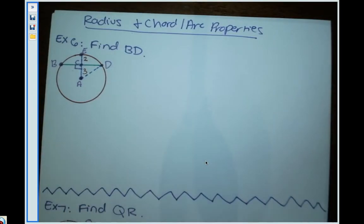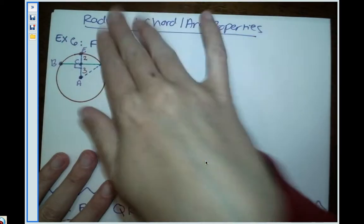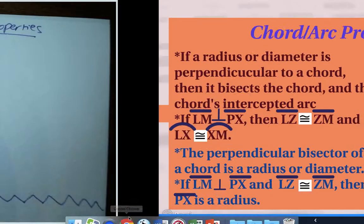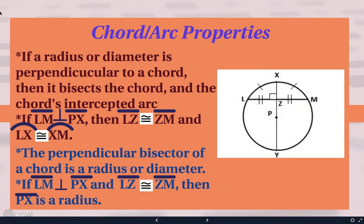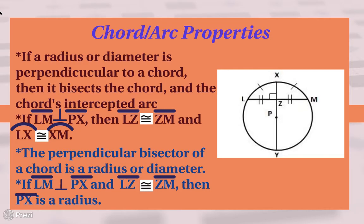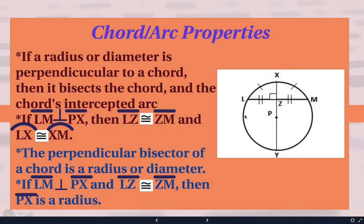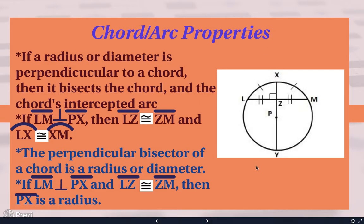We're going to finish our last chord and arc property, which involves a radius. This additional property states: if a radius or diameter is perpendicular to a chord — meaning it hits it at a 90-degree angle — then it bisects the chord, slicing it in half. It also bisects the chord's intercepted arc, so the radius bisects both the chord and the arc. The diameter can do this as well.